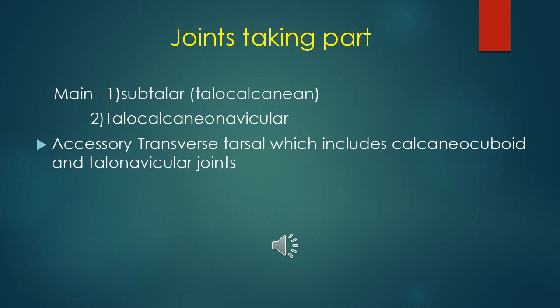The joints involved in inversion and eversion are the subtalar joint, otherwise called talo-calcaneal joint, and the talo-calcaneo-navicular joint. These are the main joints forming the movements of inversion and eversion. In addition, there is the transverse tarsal joint, which includes the calcaneo-cuboid and the talo-navicular part of the talo-calcaneo-navicular joint, as an accessory joint.